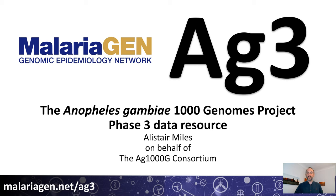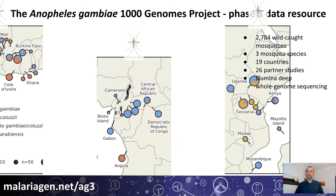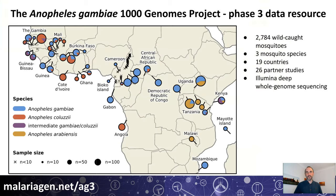This data resource is based on whole genome sequencing of 2,784 individual wild-caught mosquitoes, representing three mosquito species within the Anopheles gambiae complex.